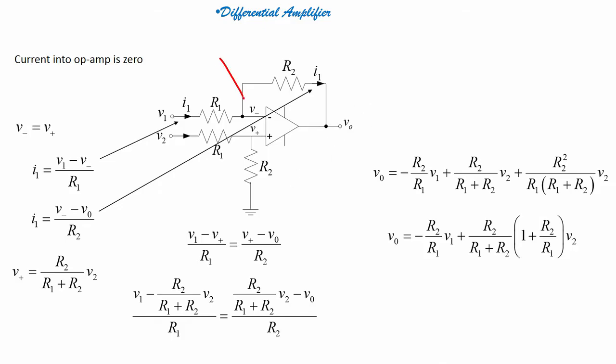You see these two points: one is V minus and another one is V plus. Now, V minus equals V plus — because current into the op-amp is zero, or because of the virtual ground concept. So V minus equals V plus.